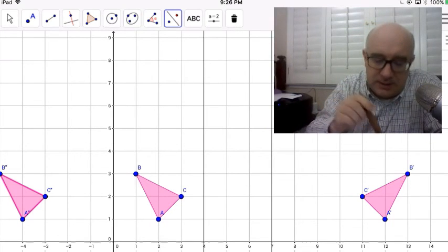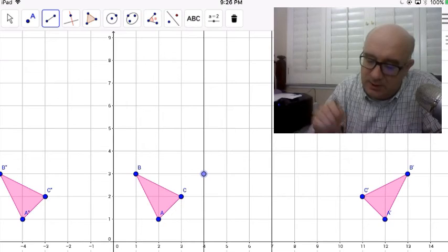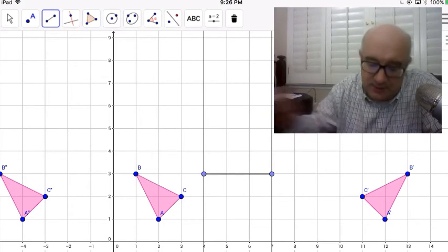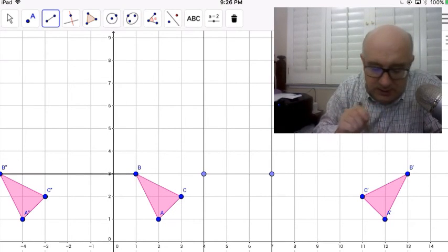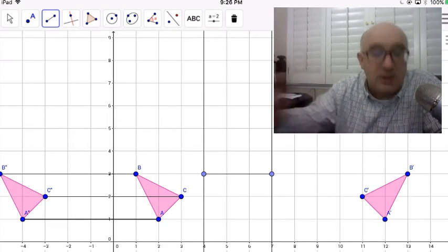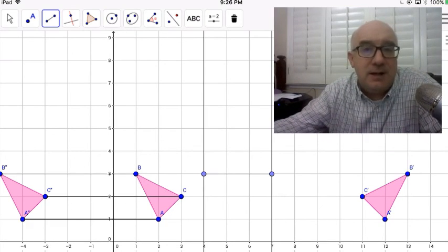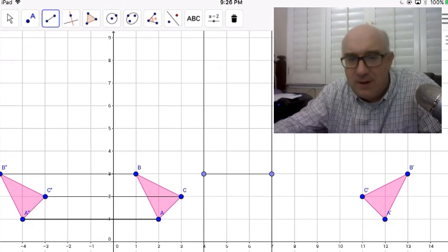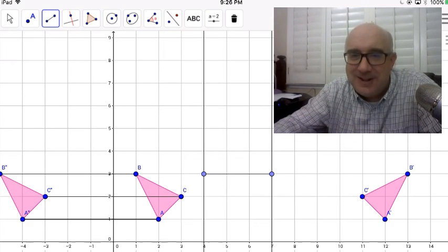But we would also notice again the distance between those parallel lines is still 3, and I want you to notice that we still moved a total of 6, but this time in a leftward direction. So obviously order has something to do with things. Hint, hint.